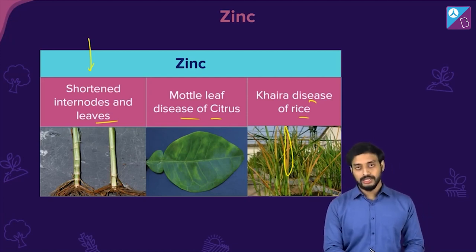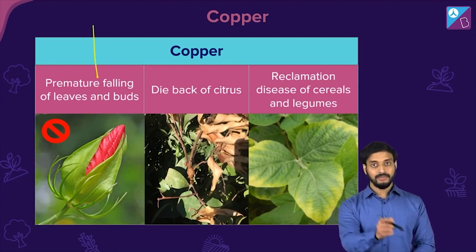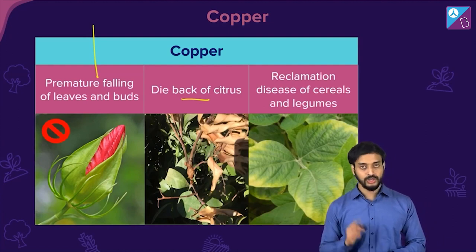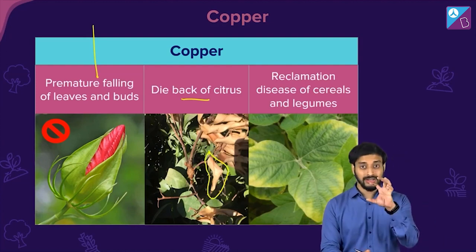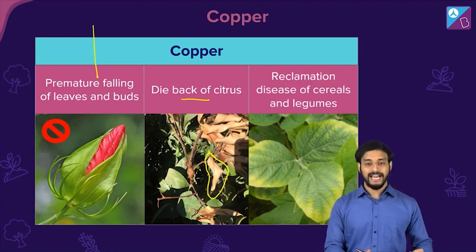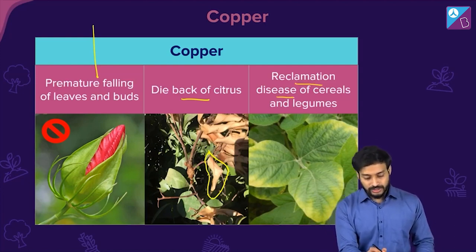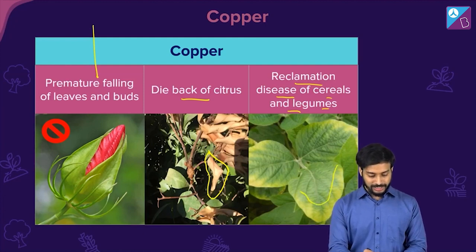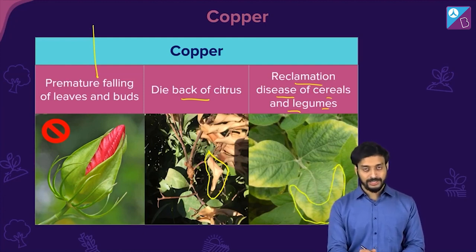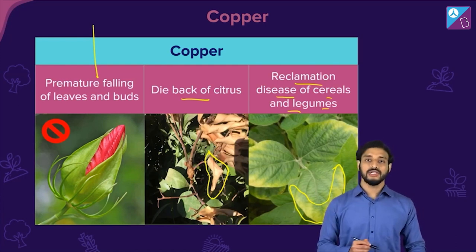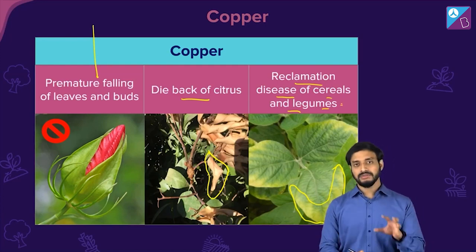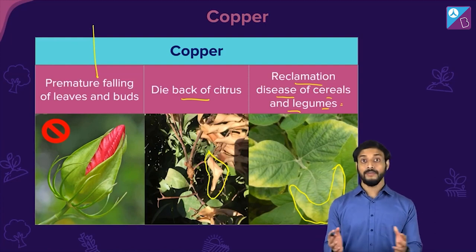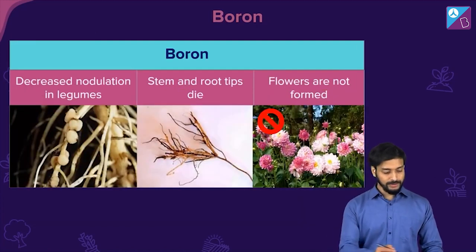Copper deficiency is very important. It causes premature falling of leaves and buds, and die back of citrus — where the leaves become brown, curled, and dried. It also causes reclamation disease of cereals and legumes, where yellowing of leaves is observed. Additionally, seed setting does not happen properly when copper is insufficient.